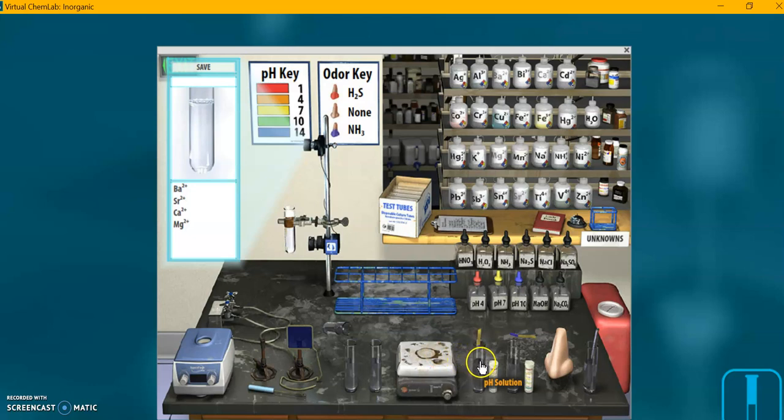pH solution. If you click on that, I'll click on that right now, you can see over here that on the test tube stand a piece of pH paper appears like right over here. And it indicates what that pH is.